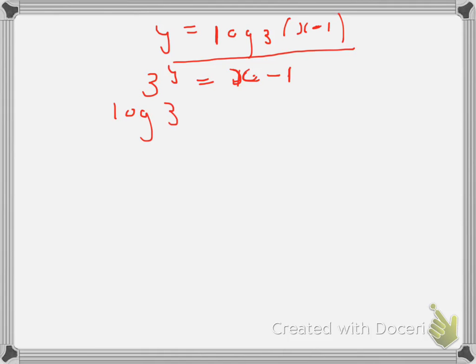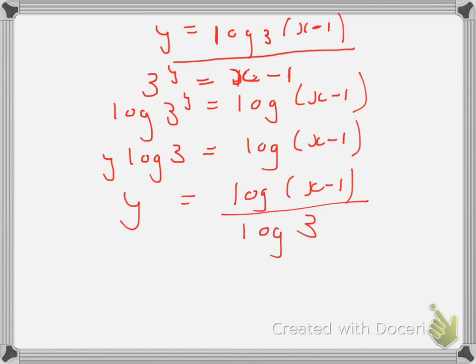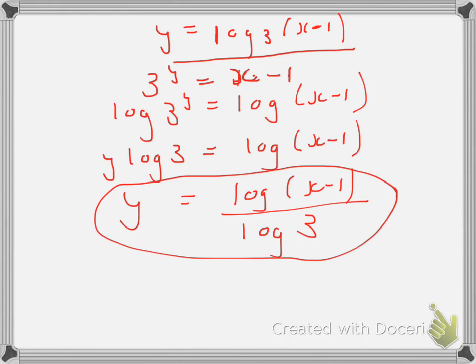When we take logs of both sides, we have this kind of statement. The exponent comes down and goes out in front. The other side is not going to change. Now, to isolate y, we simply divide both sides by log of 3. So now we have y is equal to log of x minus 1 — base 10 — over log base 10 of 3. We can put that into the graphing calculator just as it is, and you can get a graph that shows accurately that particular situation.